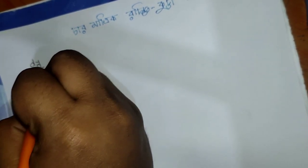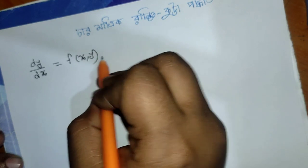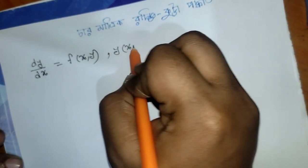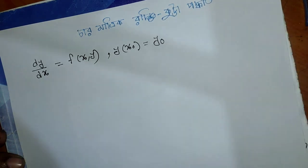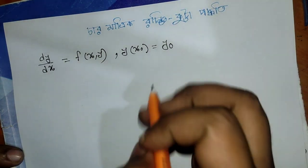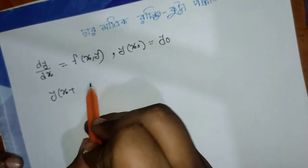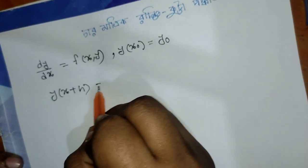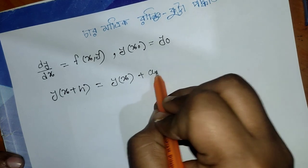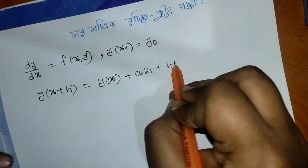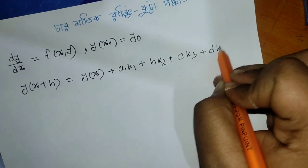dy by dx equal f of x comma y, y of x naught equal y naught. The solution is given by y equal y of x plus a·k1 plus b·k2 plus c·k3 plus d·k4, where k1, k2, k3, k4 are slope estimates to be determined.